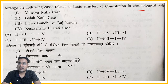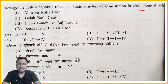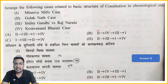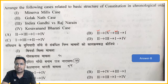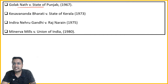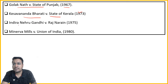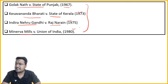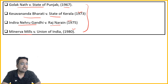So you have: Golaknath first, then Keshavananda Bharati vs Kerala 1973, then Indira Gandhi vs Raj Narayan 1975, then Minerva Mills vs Union of India 1980. We will not go into these cases in detail now — we will cover them in the practice MCQ session which will start for you.